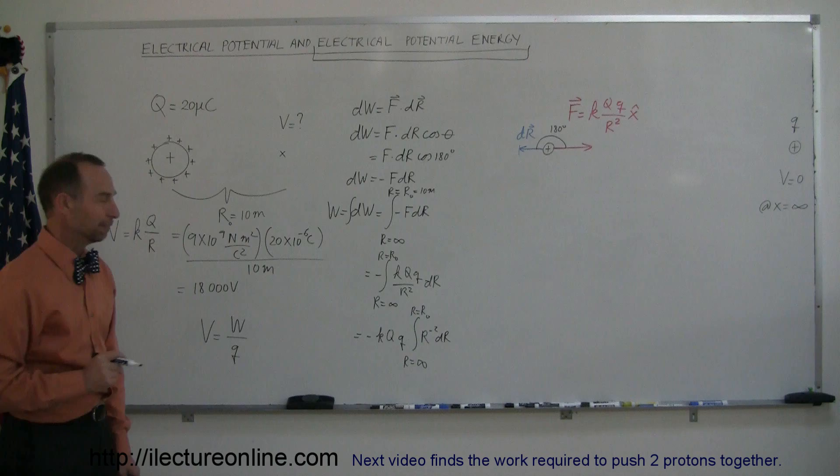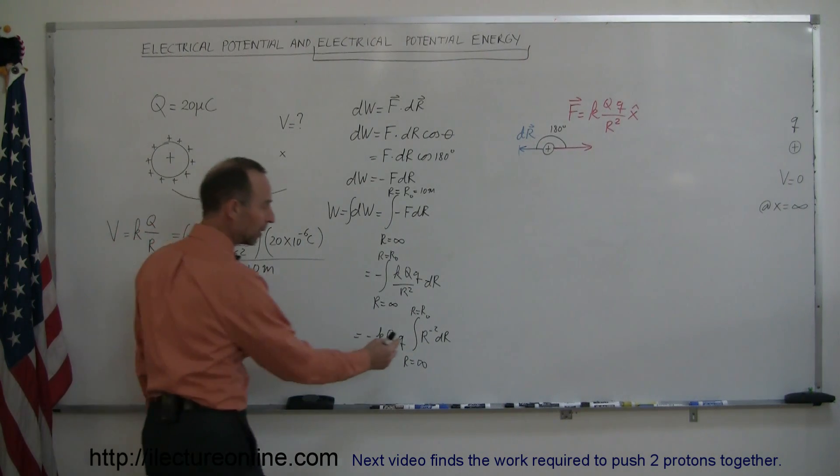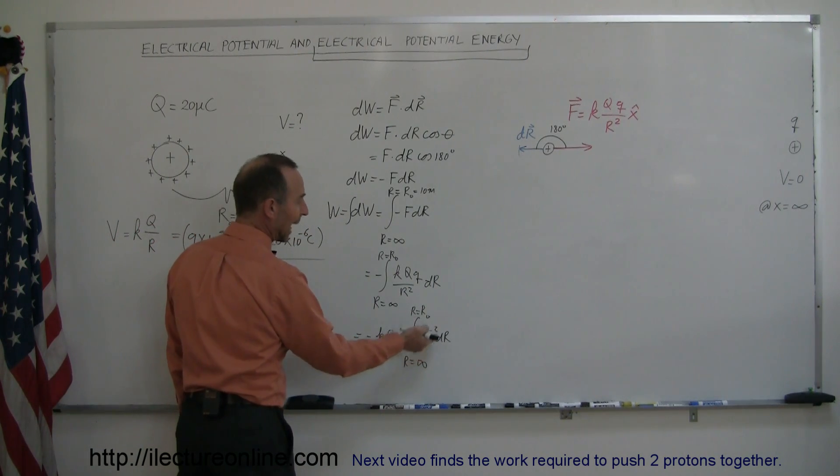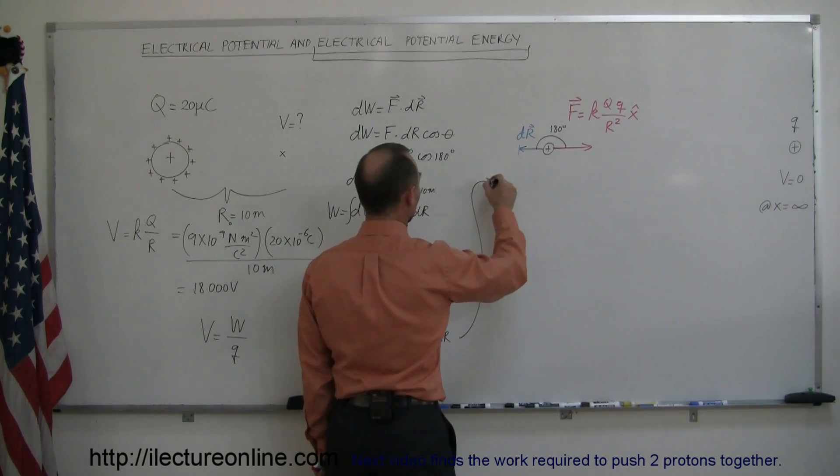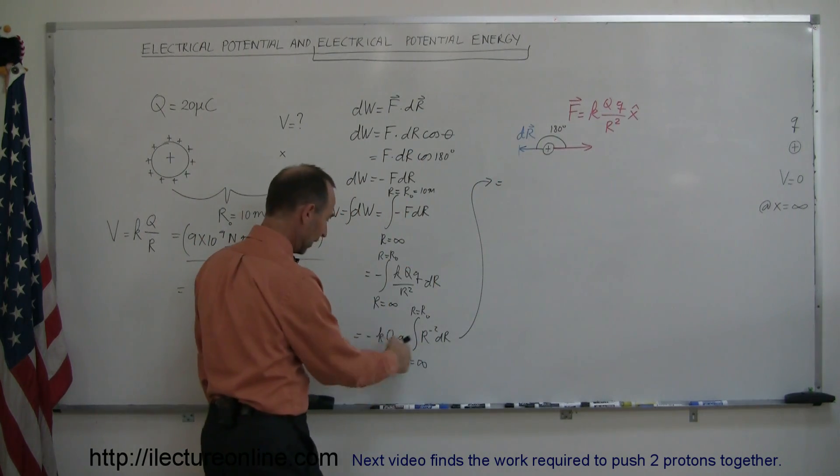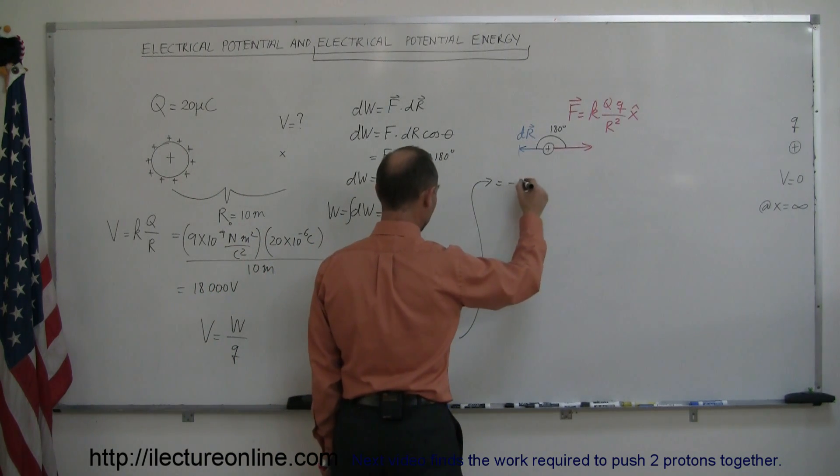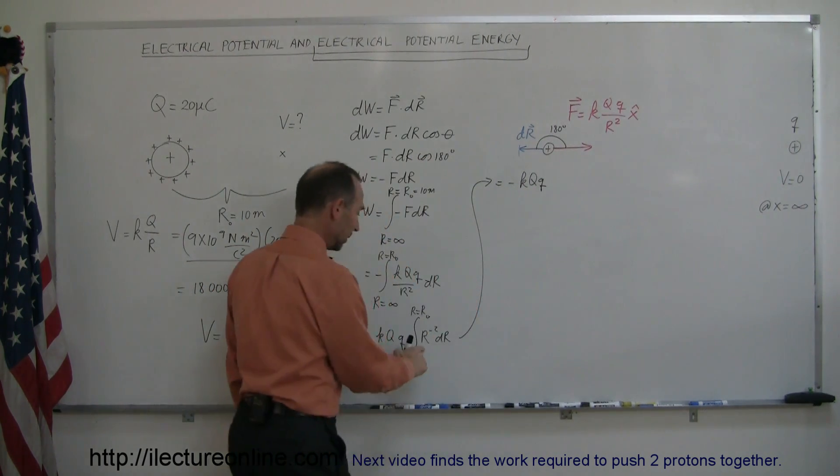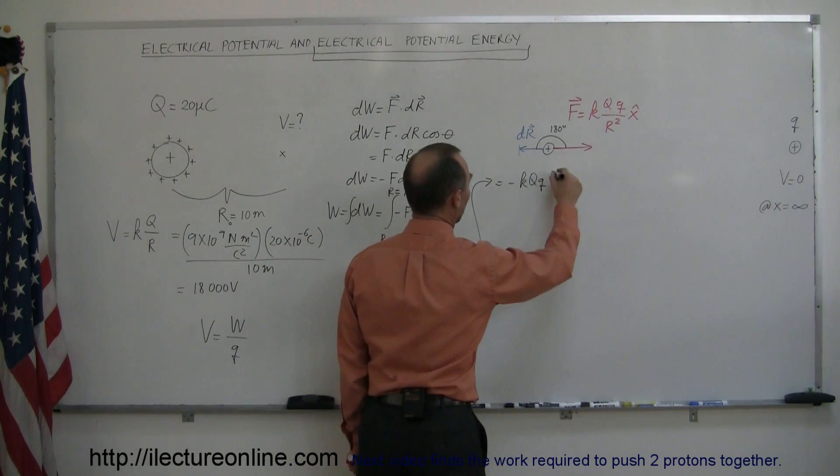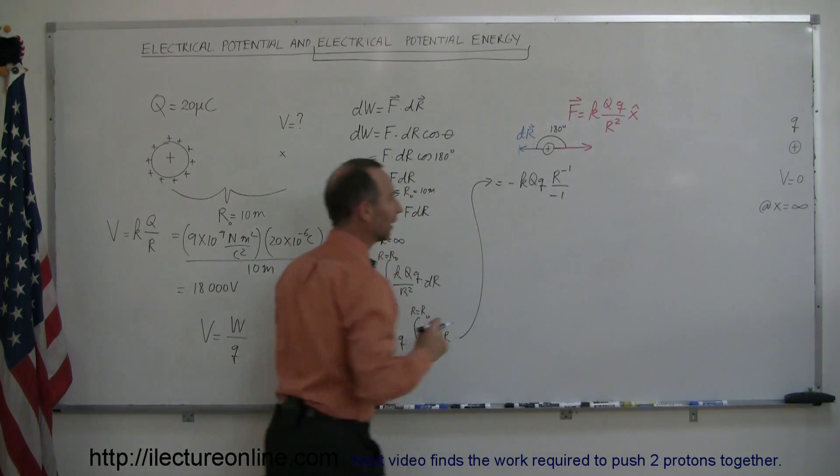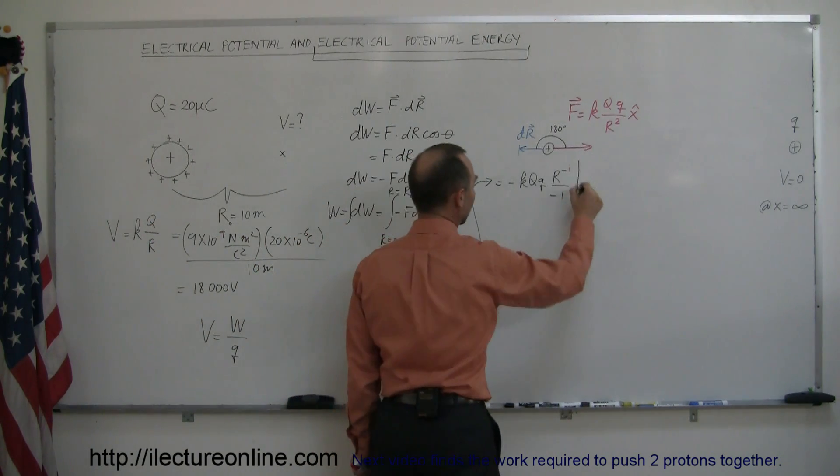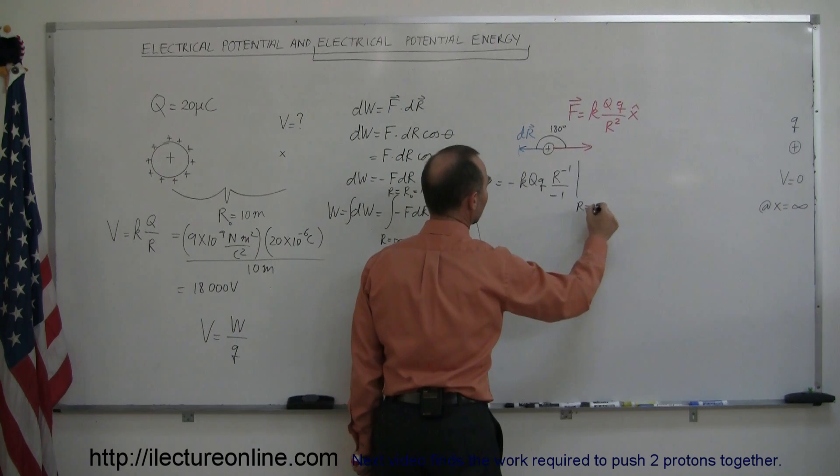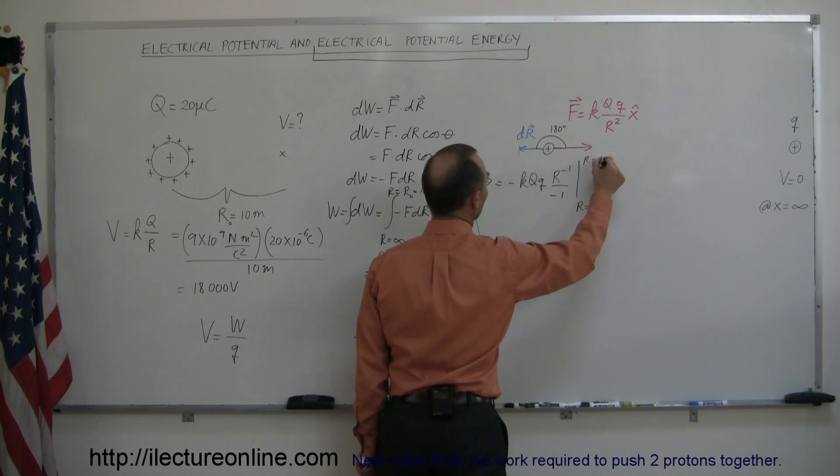Now we're ready to integrate. When we integrate r to negative 2 dr, we add 1 to the exponent and divide by the new exponent. So this is equal to, we still have to keep what we have here, that's minus k q little q. The integral of that would be r to the negative 1 over the negative 1, right? So we add 1 to the exponent, divide by new exponent, and then we evaluate that from r equals infinity to r equals to where we want to go.